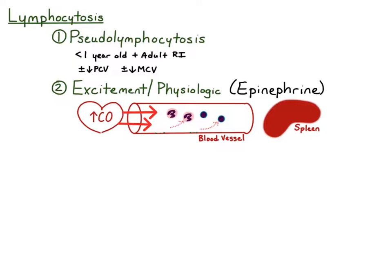That epinephrine release also causes contraction of the smooth muscle within the spleen, and this contraction releases red cells and platelets that are normally stored in the spleen. So oftentimes you'll see an erythrocytosis, which is an increased number of red cells, and a thrombocytosis, which is an increased number of platelets.